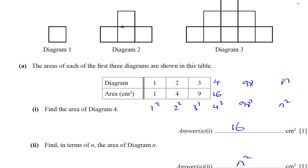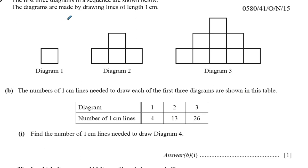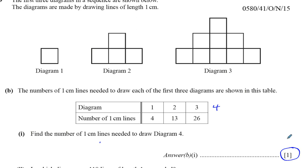Now part B tells us the same three diagrams, but this time it says the number of one centimeter lines needed to draw each of the first three diagrams are shown in this table. So for the first diagram you need four lines, for the second diagram you need thirteen lines, for the third diagram you need twenty-six lines. We want to find out how many you need for the fourth diagram. Now there are a number of ways to do this. With this only worth one mark, finding the nth term is not really necessary because the nth term here is not as straightforward as the last one.